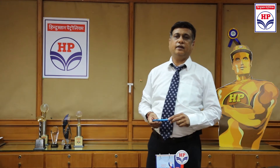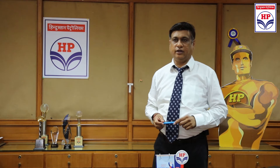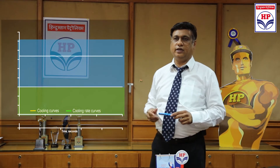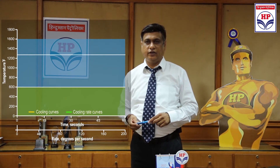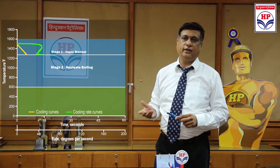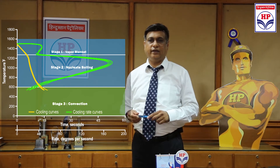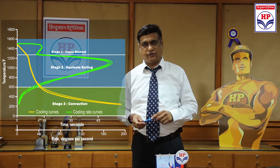There are in all three stages in the quenching operation, as shown here in the graph. One, the vapor blanket stage. Two, the nucleate boiling stage. And three, the convection stage.